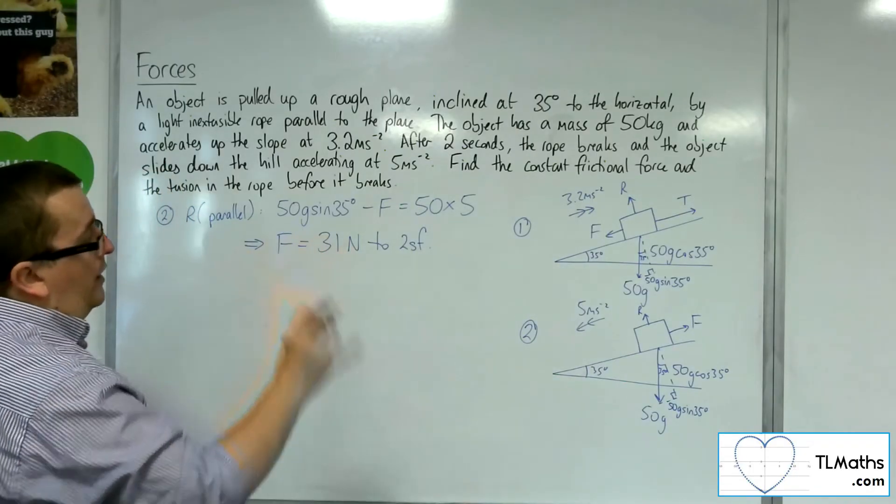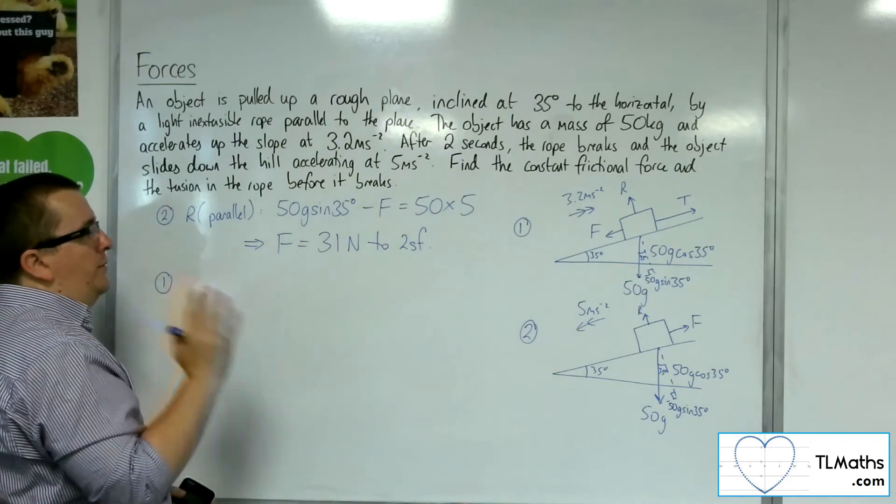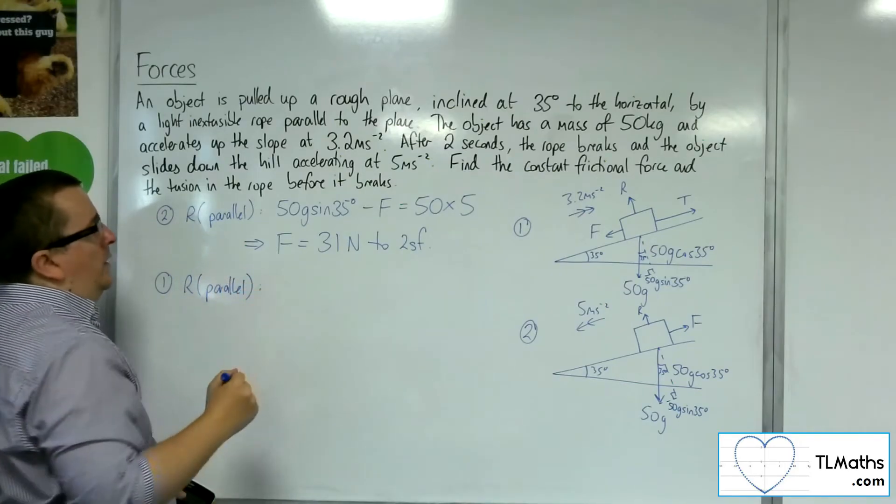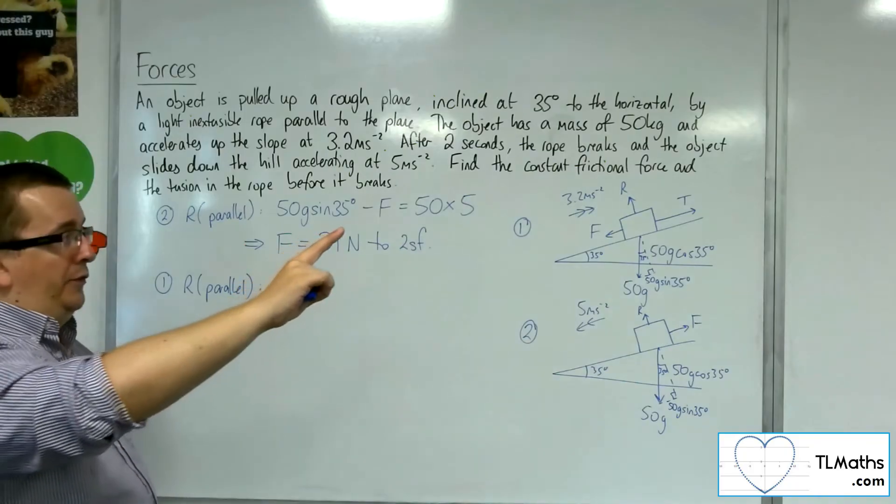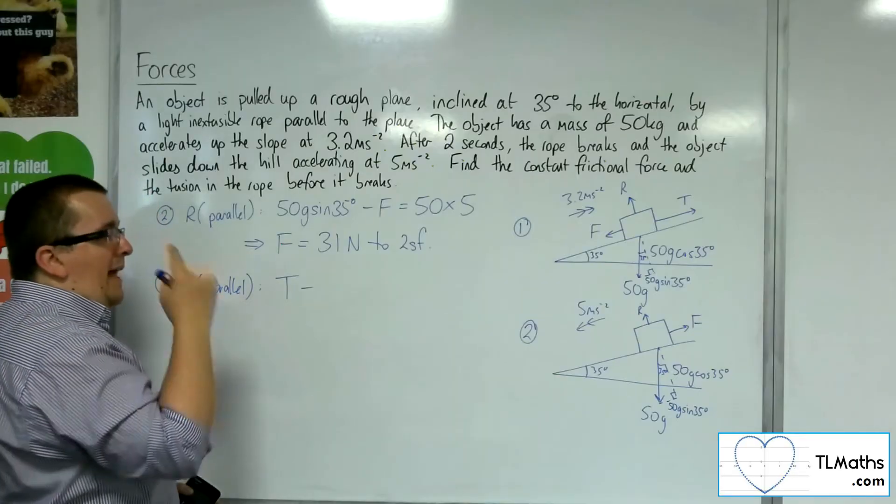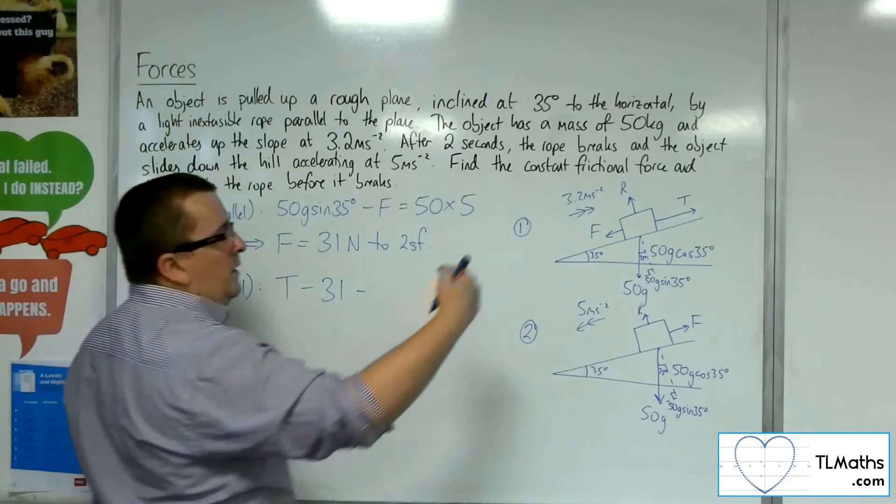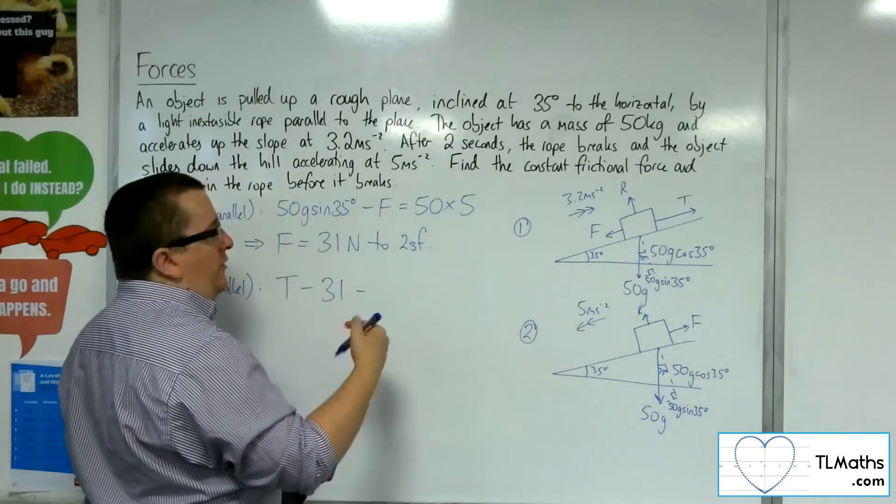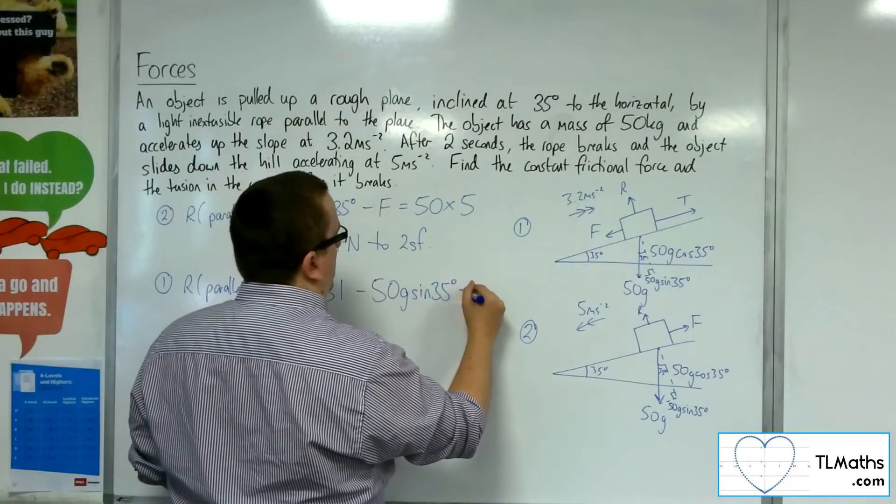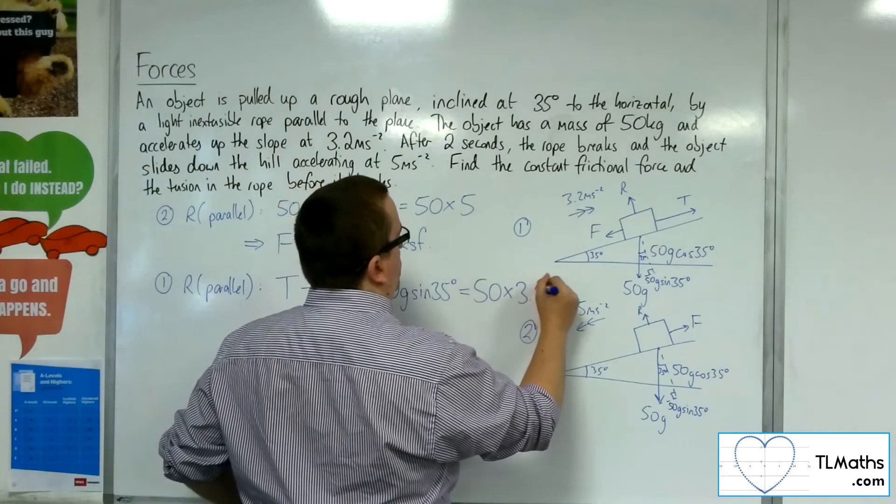Now I can look at situation number one, and I can resolve parallel to the plane again. I'm going to take up the plane as positive, the direction of motion. So I've got T take away F, which I know is 31, take away the weight that's working against me, 50g sine 35, and that's got to be equal to the mass, 50, times the acceleration, 3.2.